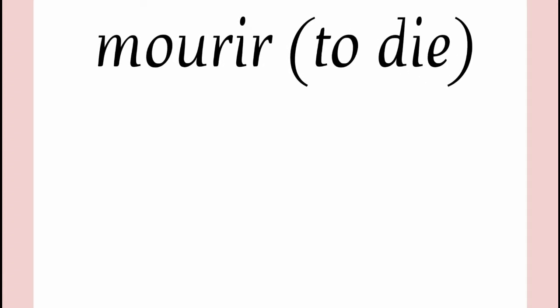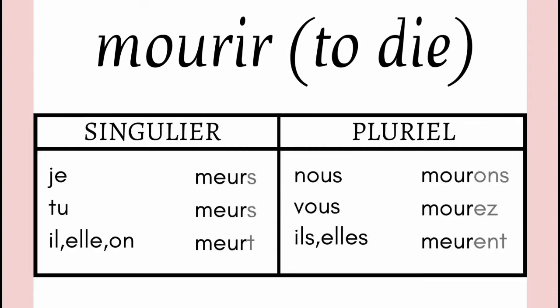The next verb we are going to cover is MOURIR. MOURIR means to die. Now this verb again has very irregular conjugation. Just observe it. Again you can see that with je, tu, il, elle and ils, elles plural, the radical is M-E-U-R. But with nous and vous, the radical is M-O-U-R.